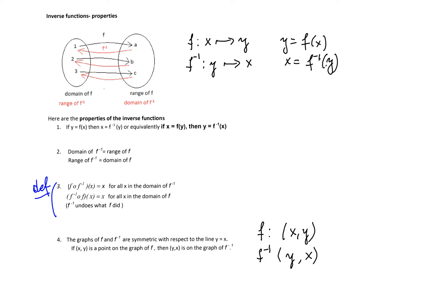So if the point (x, y) is on the graph of the function f, then the point (y, x) will be on the graph of the function f inverse. Points (x, y) and (y, x) are symmetric with respect to the line y equal x, and therefore the graphs of the function f and f inverse are symmetric with respect to the line y equal x.